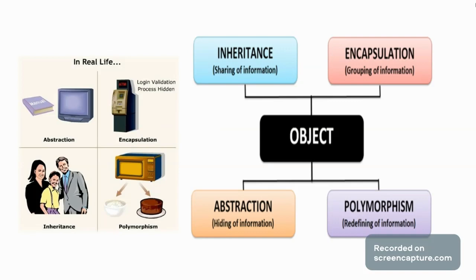Now we will talk about encapsulation. What is encapsulation? It is the grouping of information. In abstraction, we hide a big amount of data. But in encapsulation, we hide a small amount of data. In abstraction we hide information, and in encapsulation we hide data. Basically both are a little bit the same. We use access specifiers to show data, protect data, and make data private.